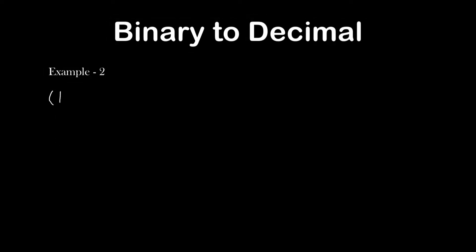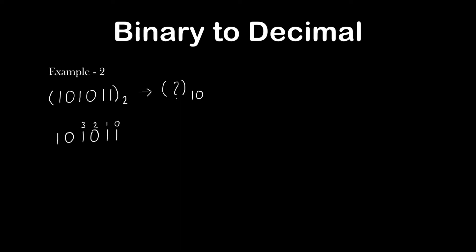Let's take another example. Here I have taken the binary number 101011. First I will write the given binary number, then put the position value of each digit starting from the right end. Then we multiply each digit with 2 to the power of its respective position value.